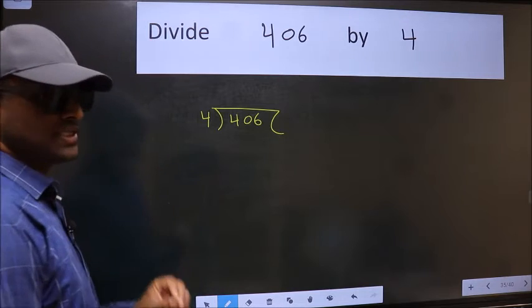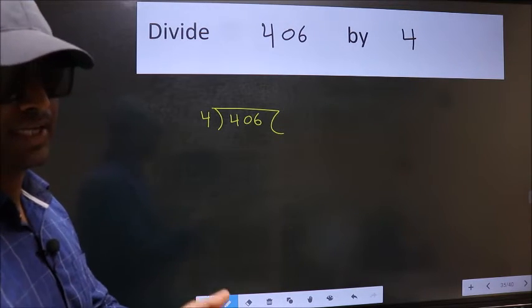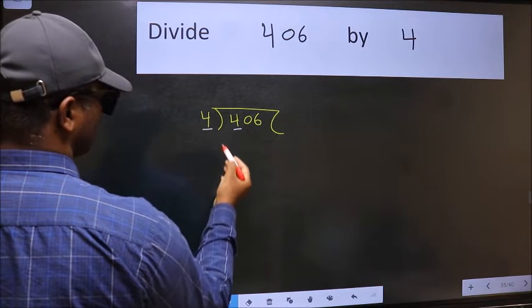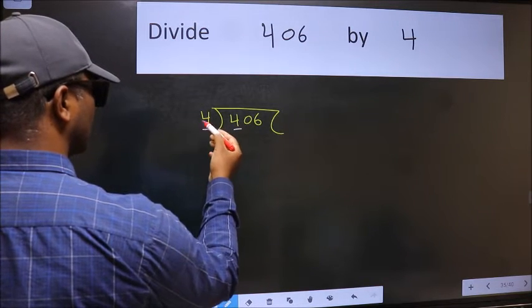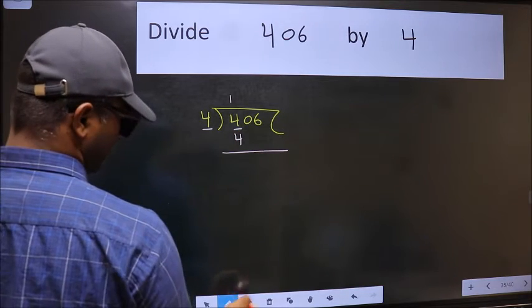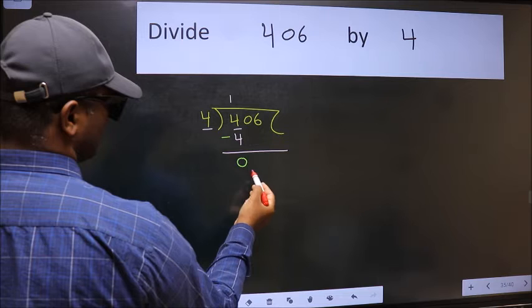This is your step 1. Next. Here we have 4, here also 4. When do we get 4 in the 4 table? 4 ones 4. Now we should subtract. We get 0.